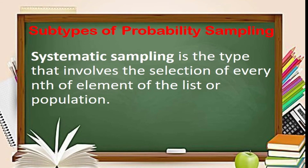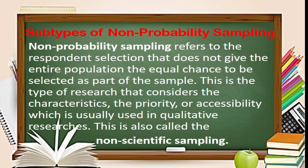Systematic sampling is the type that involves the selection of every nth element of the list or population. Non-probability sampling is a process of selecting respondents in which not all members of an entire population are given a chance of being selected as samples. There are cases where certain segments of a population are given priority over others, such as when a researcher does not intend to generalize to a larger population. This is also called non-scientific sampling and is commonly used in qualitative research.